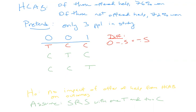Under the null hypothesis, which of these three possibilities we have — TCC, CTC, or CCT — has nothing to do with the outcomes, the 0-0-1. The null hypothesis says that whether any particular person wins their case has nothing to do with whether they were offered help from H-Lab. Whether I have a zero or a one as my win outcome has nothing to do with whether there's a T or a C listed for me.